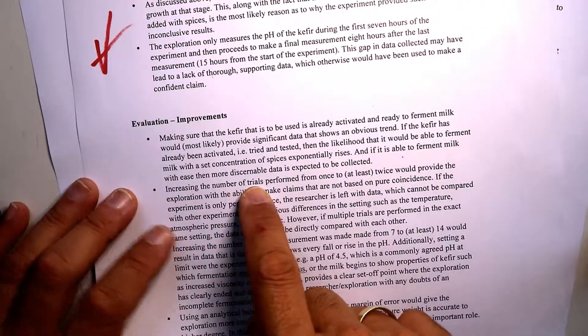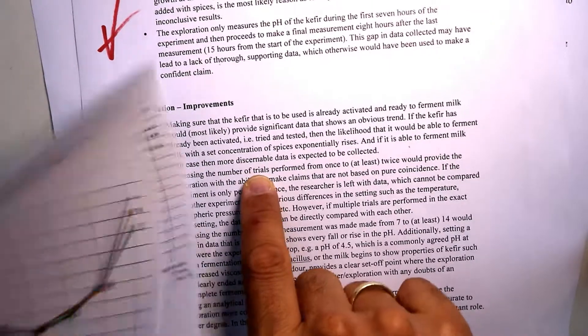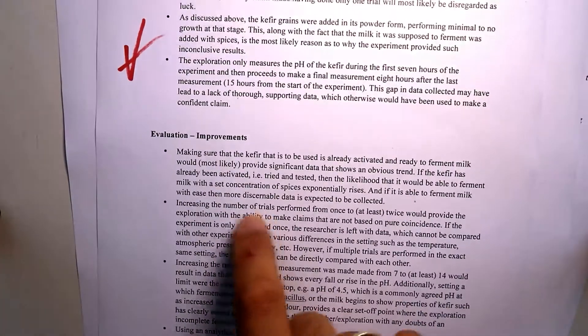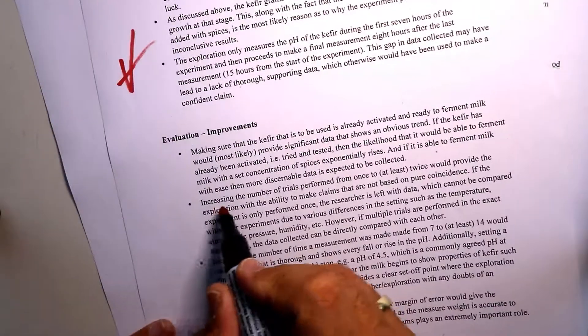Then the likelihood, yeah, but this is not an improvement. He's just mentioning some stuff here. Increasing the number of trials. How many trials? Why do you need more trials? I mean, come on, you already have enough trials here. I don't get it. What more do you expect?